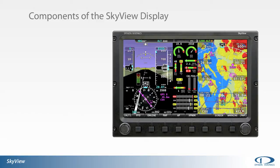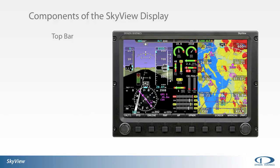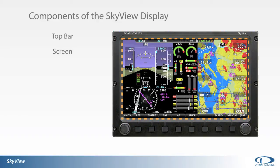The top bar displays several different items: autopilot mode function, current time, and transponder status can all be displayed in the top bar. The main SkyView screen layout can be easily adjusted by the pilot to show 19 different combinations of primary flight display, or PFD, engine, and moving map data.